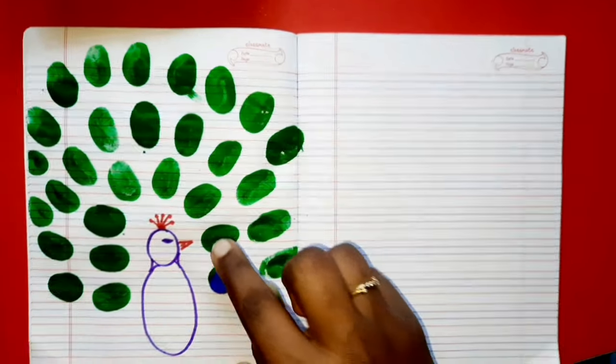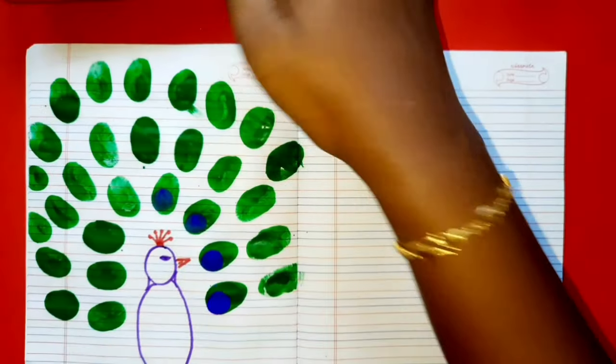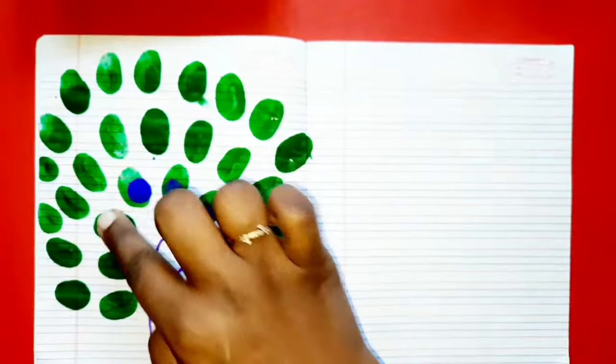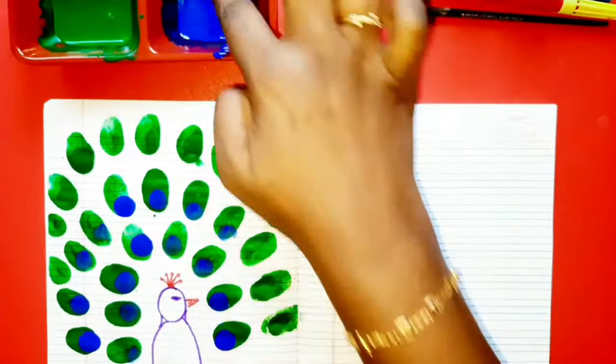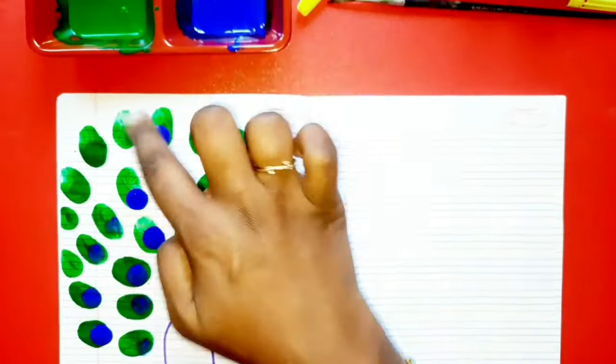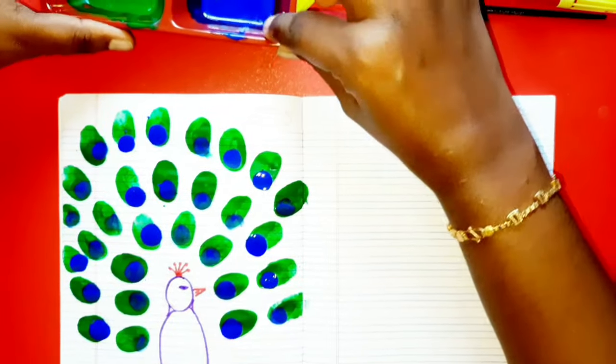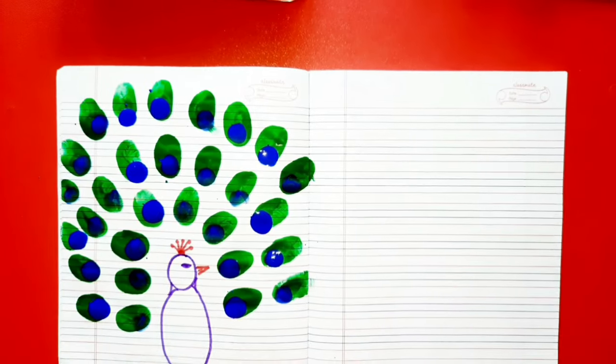Now it is dry and now you have to take your blue color and with your index finger let's add in. Here in the middle just do like this. Okay. The blue color.